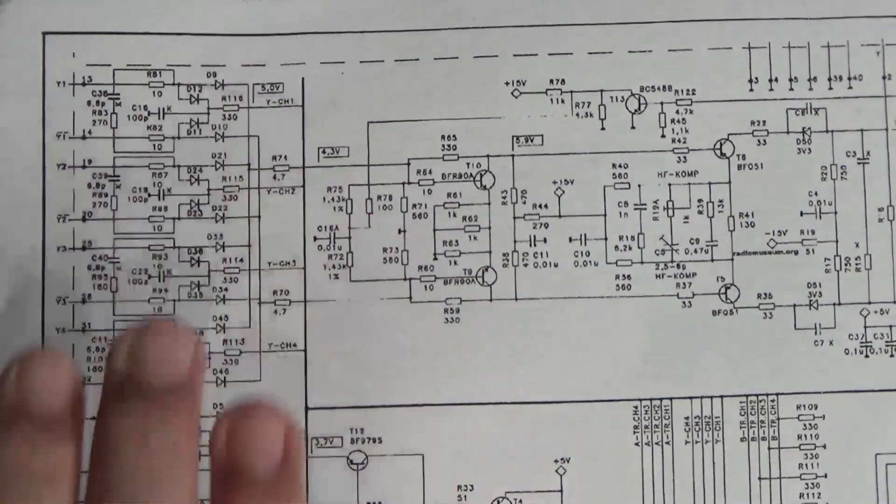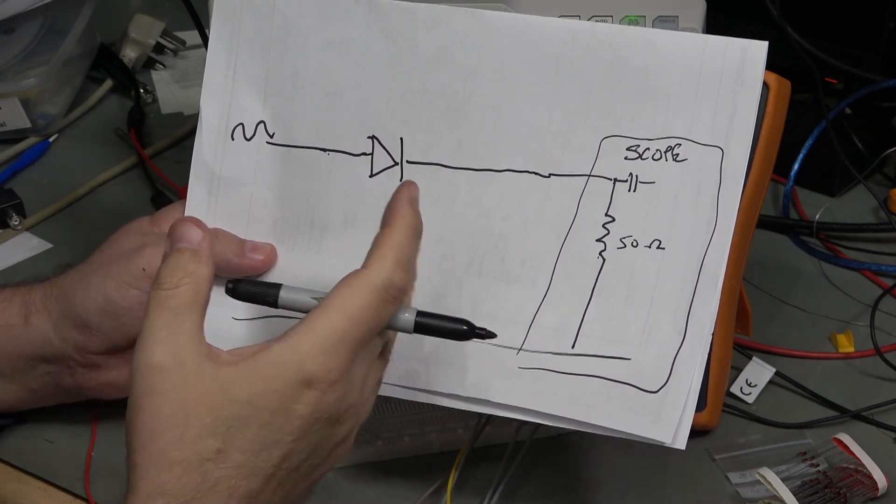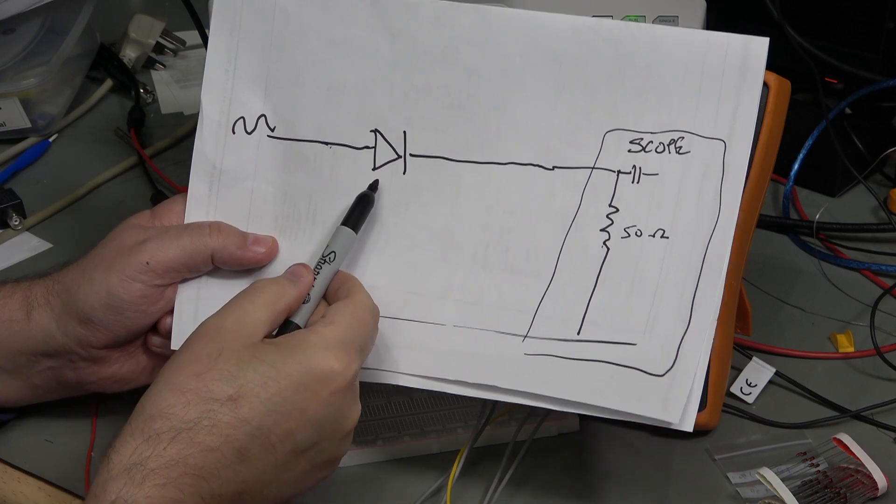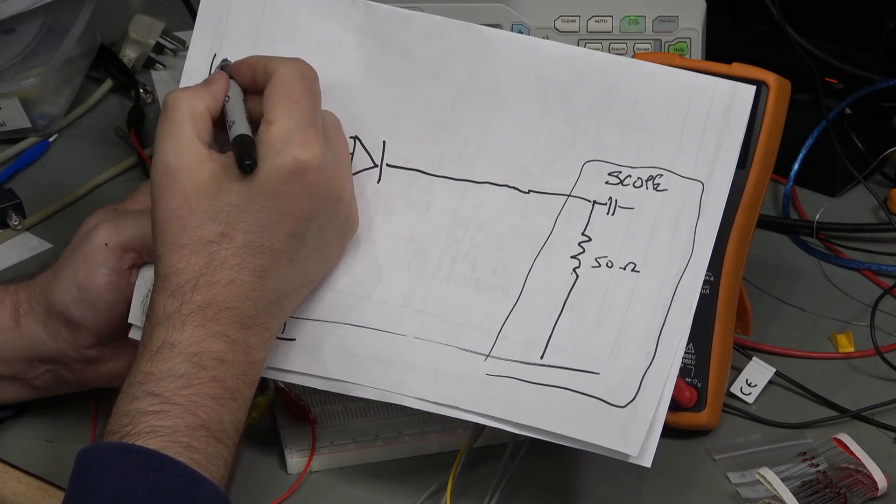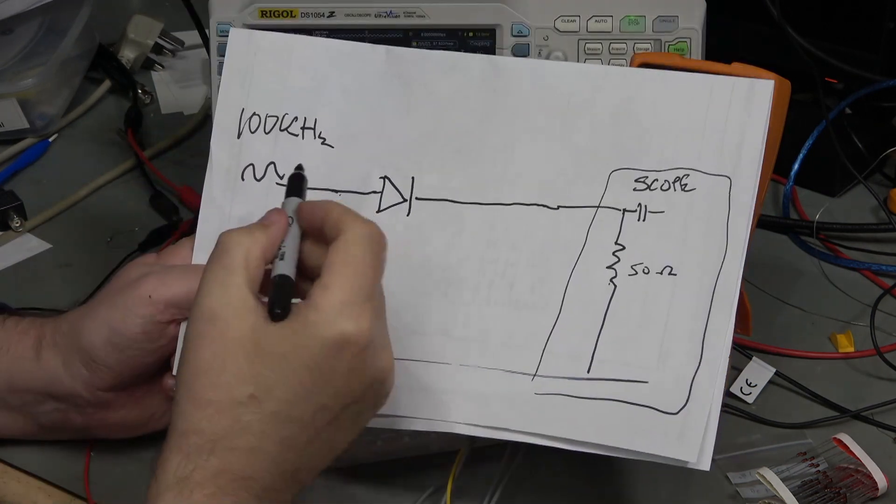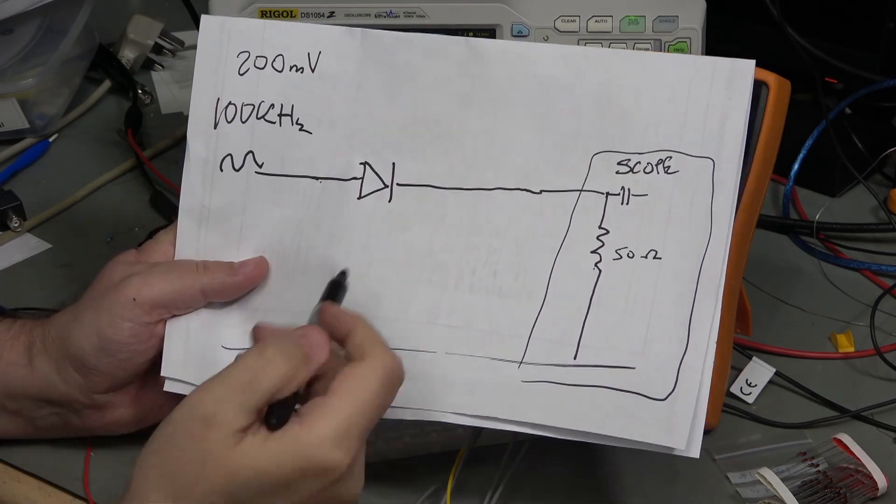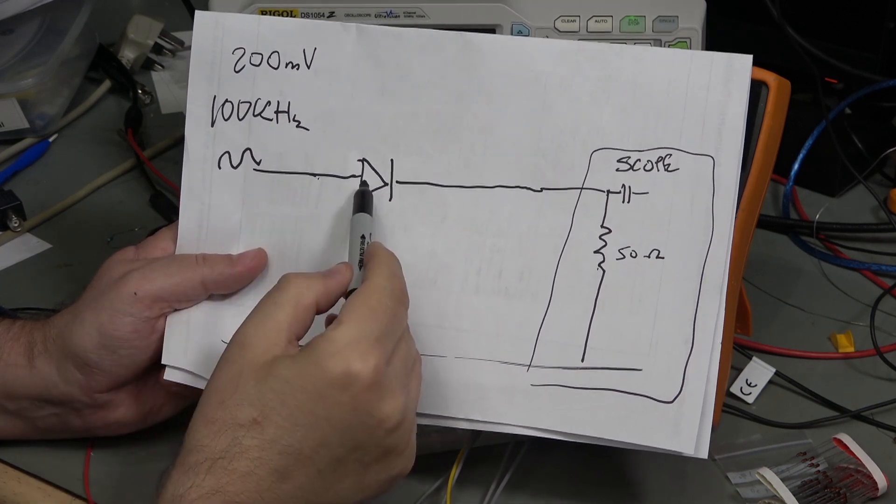Okay, so I've tried to make the demonstration circuit about as easy as I can, kept it down to the minimum number of components. So what I've got here is I've got a 100 kilohertz signal coming in and it is 200 millivolts peak to peak.